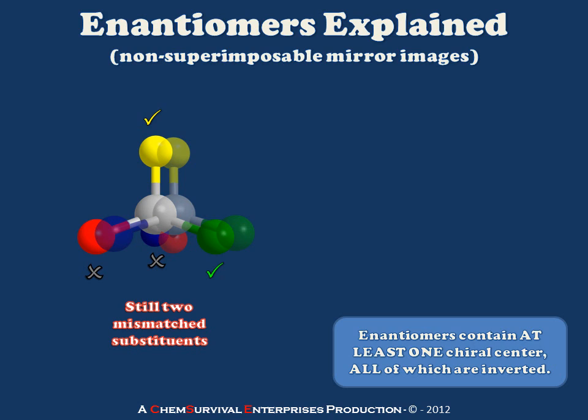Under no set of rotations and translations can I make these two molecules overlap, which means they are distinct chemical entities. We need to recognize that each of these arrangements is a different kind of molecule. When we have a mirror image which is not superimposable, we refer to these stereoisomers as enantiomers.